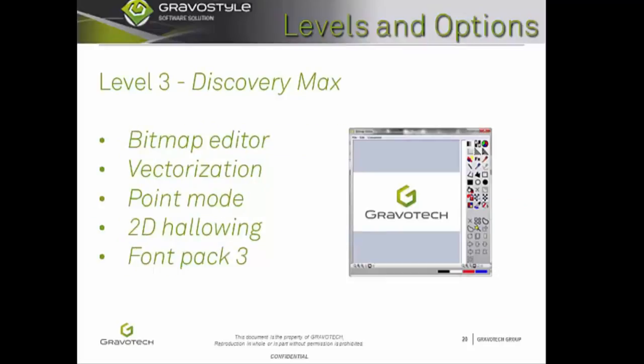The third level of Gravastyle is Discovery Max. Discovery Max is great for scanning and printing logos, trophy plaques, and anything with text and logos. The bitmap editor function allows you to retouch an image without using another software program. Vectorization gives you the ability to convert an image into vectors, allowing the machine to engrave the image or logo. Point mode gives you the power to manipulate and retouch your newly vectorized image — every point can be moved, aligned, projected, and more. 2D hollowing allows you to hollow out a shape through the automatic creation of optimal hollowing toolpaths. Once the composition is complete, it is very simple to associate the engraving parameters such as tool, depth, speed, etc., through the clever use of a color set.